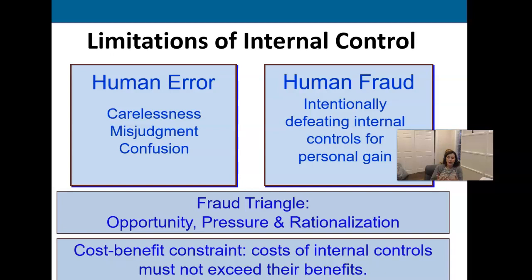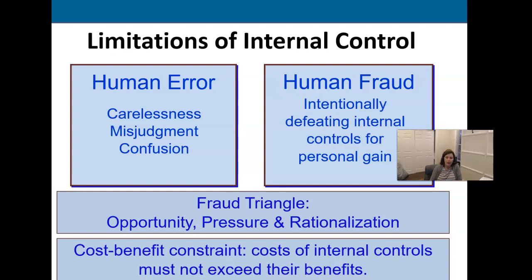Internal controls can be simple or really complex. A company needs to assess the level of risk and the cost of having a particular control. If the cost of the control is more than what it would save the company if a fraud occurred, it may not be worth it — you might just accept the level of risk, get insurance to cover it, or find another approach. Sometimes hiring an extra person just so there's another set of eyes may not be justified when that salary and benefits outweigh what could potentially be lost.